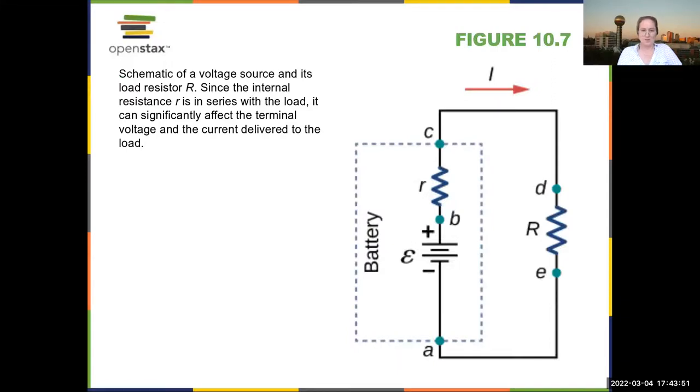Here you can see a simple circuit with a battery. Here's your positive terminal, so your current is flowing in this direction. Then you can add a small internal resistance to take into account the fact that the battery can only supply a limited amount of current.